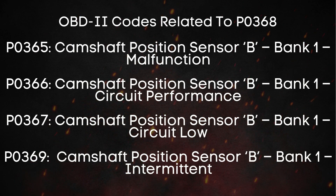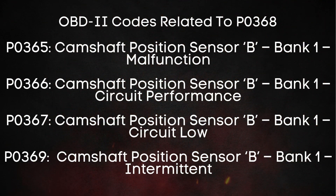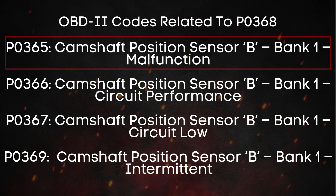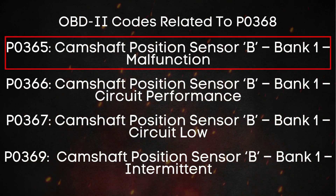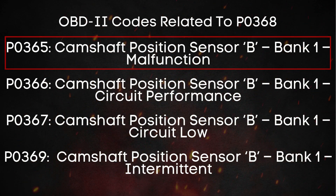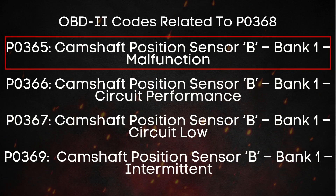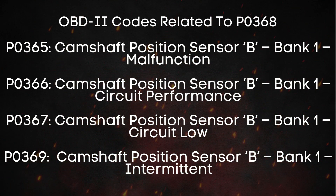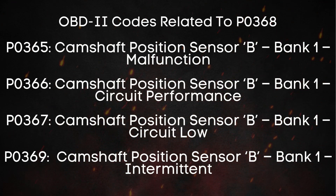Just like the P0368 code, you might also come across a few other trouble codes related to the camshaft position sensor. One of the most common ones is P0365, which stands for Exhaust Camshaft Position Sensor for Bank 1 Has Malfunctioned. In simple terms, this means there's a problem in the circuit that monitors the camshaft position. It could be caused by a broken wire, a poor electrical connector, or even a faulty camshaft position sensor itself.